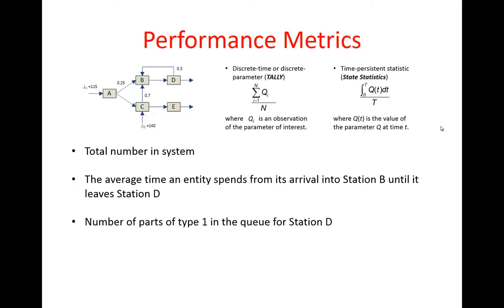The third metric is the number of parts of type 1 in the queue for station D. Again, Simio has this built-in statistic that reports the number in queue regardless of the type for every server object instance.